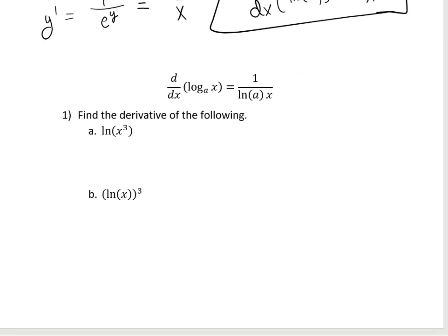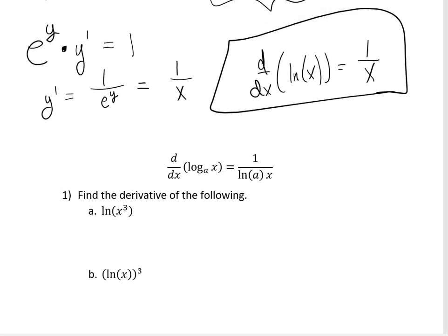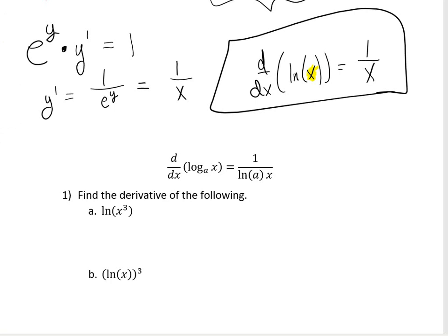Let's go ahead and do a couple of examples. We want to find the derivative of the natural log of x cubed. Going back to the previous rule, the derivative of the natural log of whatever you put inside is going to equal 1 divided by the inside. We'll use the chain rule here. Our outside is the natural log; our inside is x cubed. So y prime would be 1 over x cubed, times the derivative of x cubed, which is 3x squared. I can simplify this down to 3 divided by x.